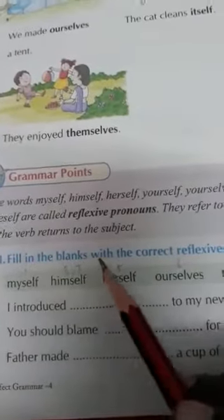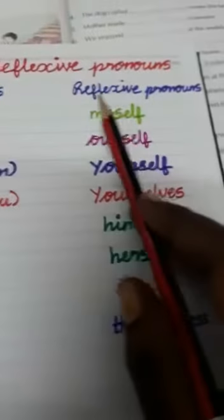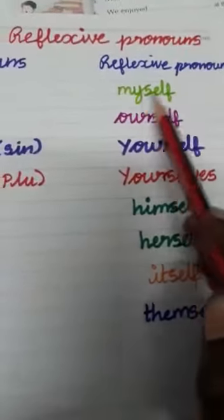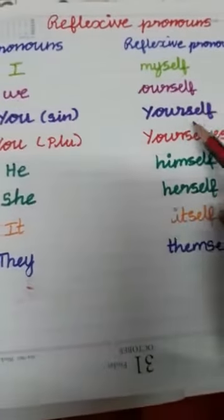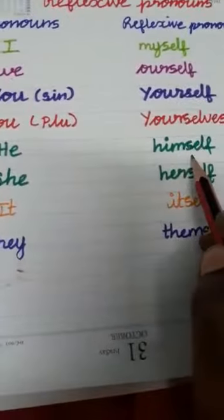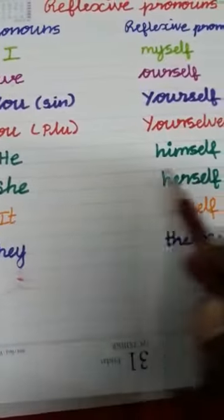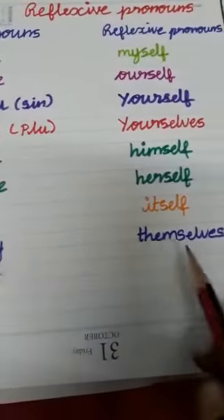Fill in the blanks. First, let's review the rule. The pronoun 'I' changes to the reflexive pronoun 'myself'. 'We' becomes 'ourselves'. 'You' singular becomes 'yourself'. 'You' plural becomes 'yourselves'. 'He' becomes 'himself'. 'She' becomes 'herself'. 'It' becomes 'itself'. 'They' becomes 'themselves'.